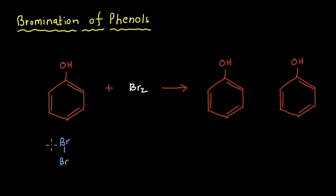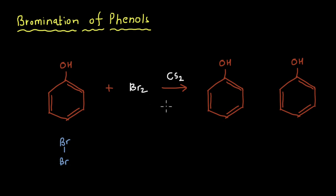So what we are going to do is change the solvent. We are going to use CS₂, or carbon disulfide, as the solvent. If you look at the electronegativity values of carbon and sulfur, they are quite close, so CS₂ is a non-polar molecule and thus a non-polar solvent. It will not easily pull apart both bromines, and effectively there will be very few bromines available for the reaction. We'll also perform this reaction at a low temperature.